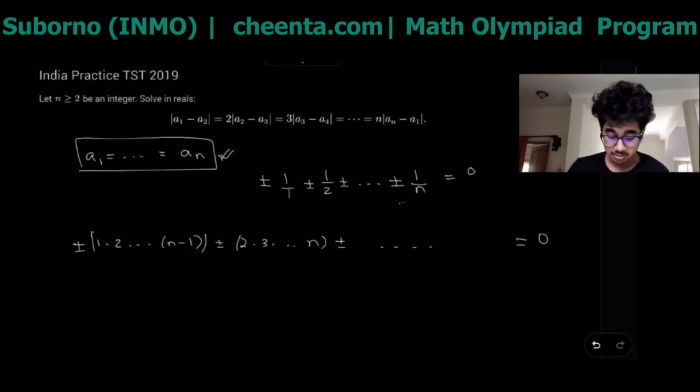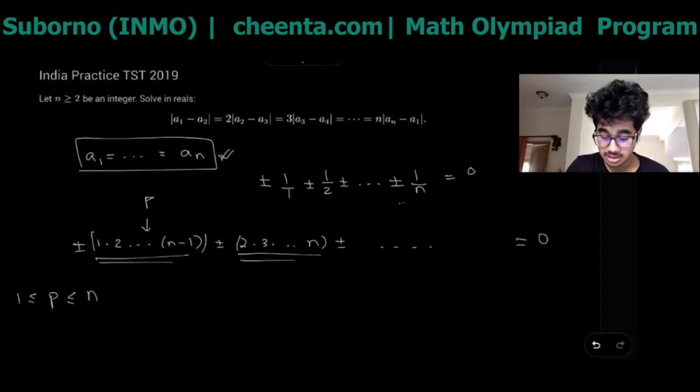Something like let's say one times two till n minus one plus minus n and so on, basically n of such terms. Let's see how to work on this problem. Let's assume that there is some prime p between one and n. p would be in every single term except the one where that is the element that is left out.